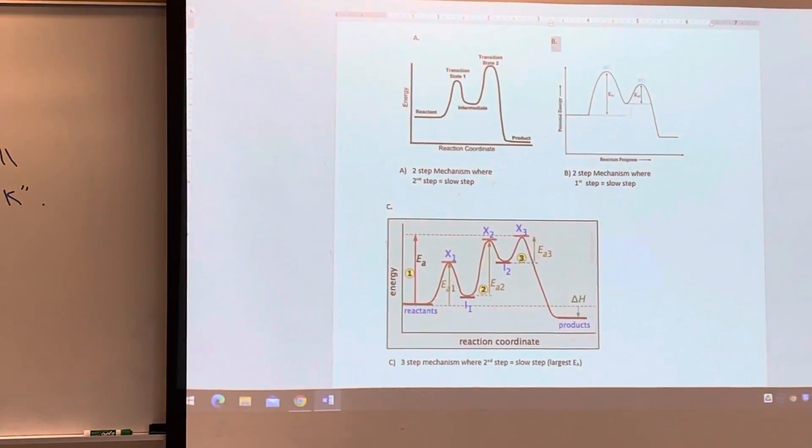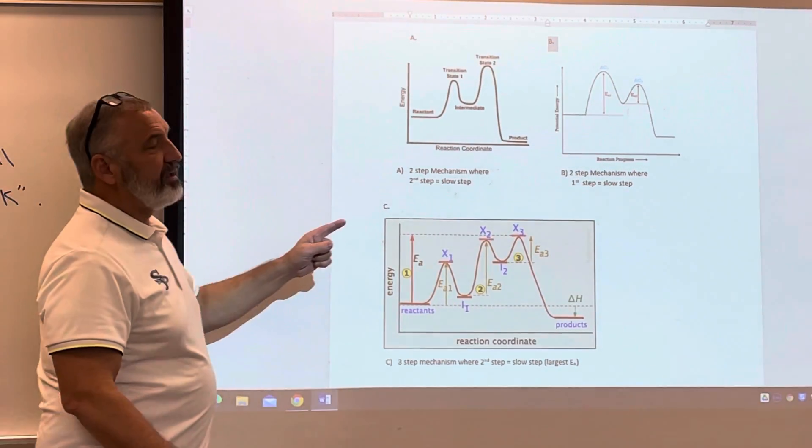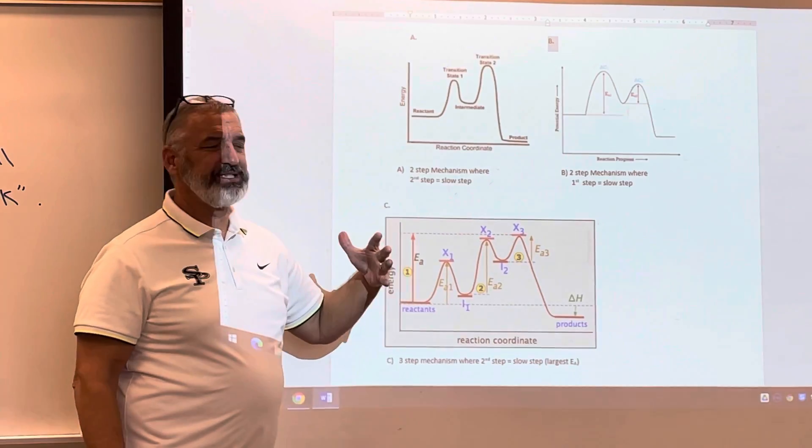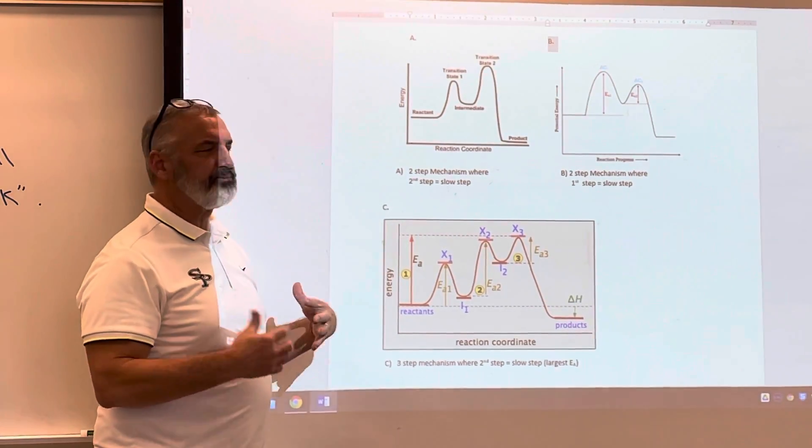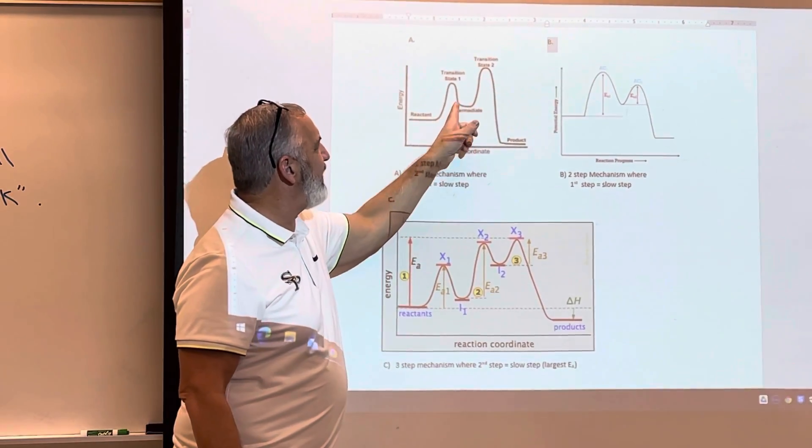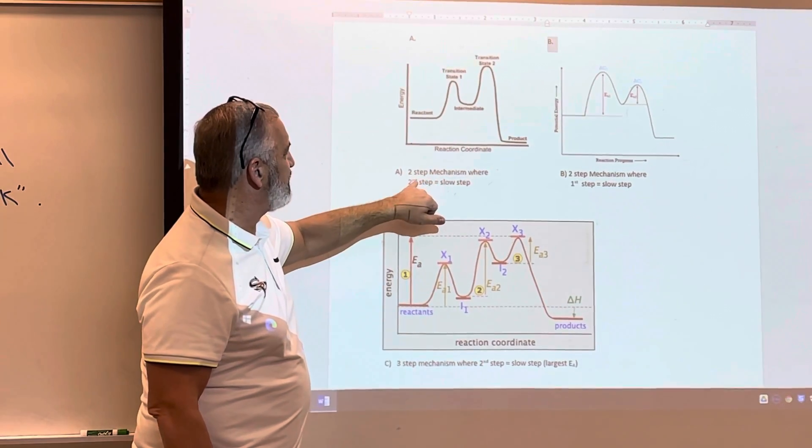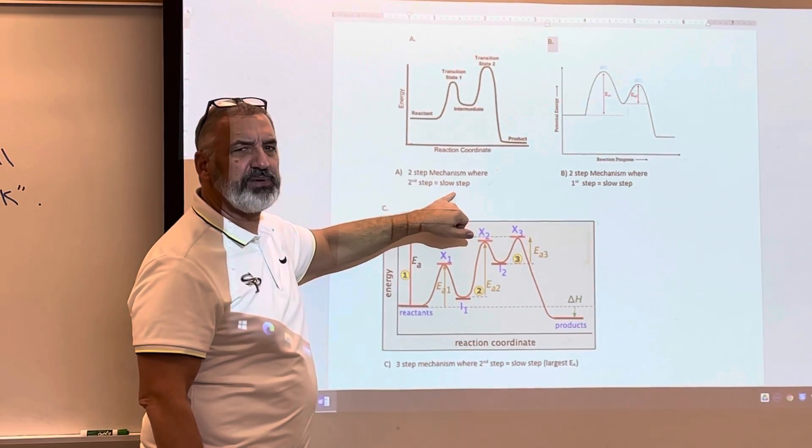Now the second thing is if we want to do an energy diagram of a reaction mechanism. If you're given the mechanism for a two-step mechanism, you're going to have two peaks, two activation energies. And so in this case, this two-step mechanism where the second step is the slow step...